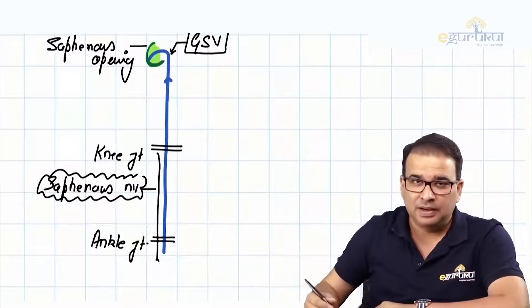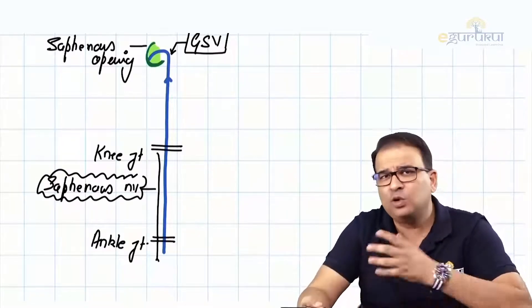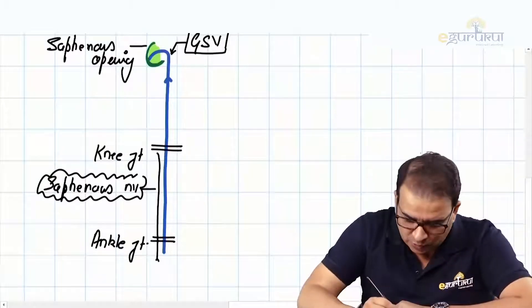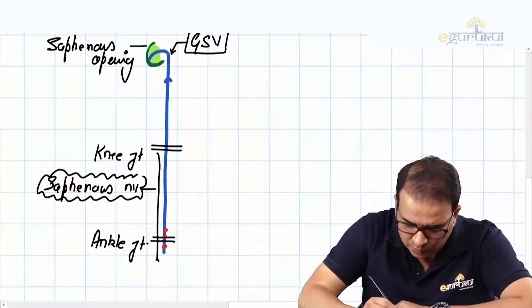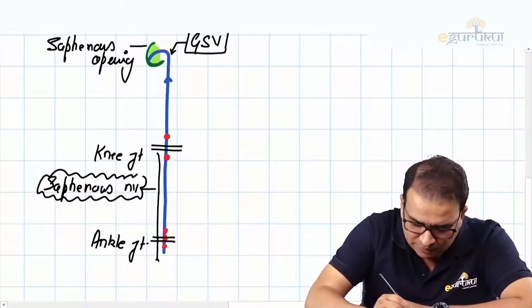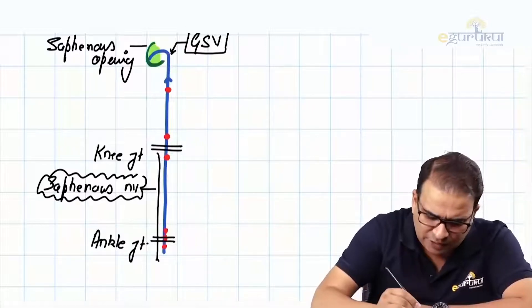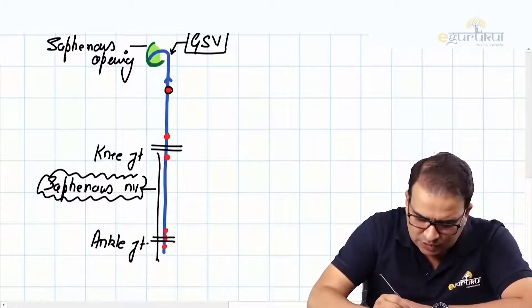Coming to the main point: perforators. We have perforators via which the great saphenous vein communicates with the deeper veins inside. If those perforators are not working, you know the condition is called varicose veins. We have perforators at the ankle, below the knee, above the knee, and in the mid-thigh.